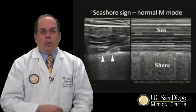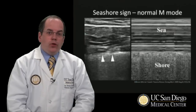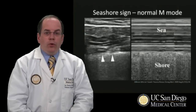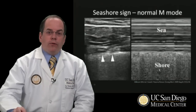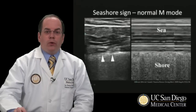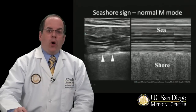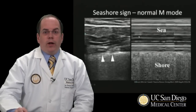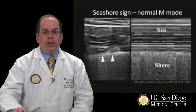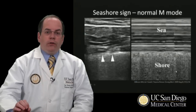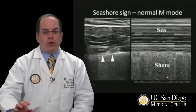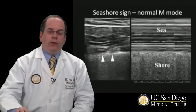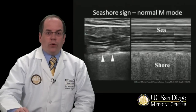If you want an extra way of looking at this, you can use M mode. Over time you'll see that the motion of the lung in the far field has a granular appearance. This is called the seashore sign, whereas the layers of the chest wall appear to be the sea or waves, and this granular sandy appearance is the actual motion of the lung in the far field — the shore. So if you see sea over shore, this is a sign that there is in fact no pneumothorax present.